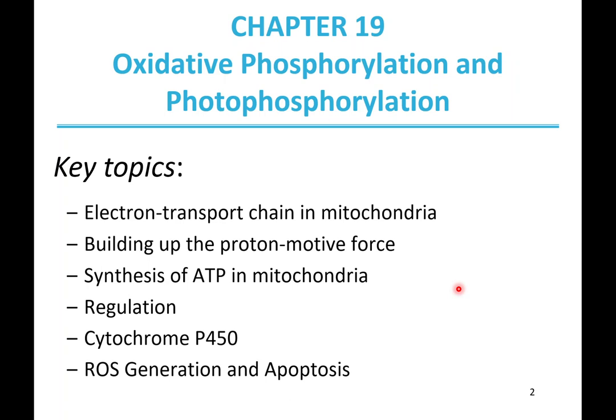This material is in chapter 19. We're going to cover specifically the electron transport chain, how that builds up what's known as the proton motive force, then the synthesis of ATP using that proton motive force, and how this is regulated. We'll also talk briefly about cytochrome P450, and about reactive oxygen species generation and apoptosis, because the electron transport chain can generate some reactive oxygen species that can be damaging. When that occurs in the mitochondria, it can lead to apoptosis, which is programmed cell death.